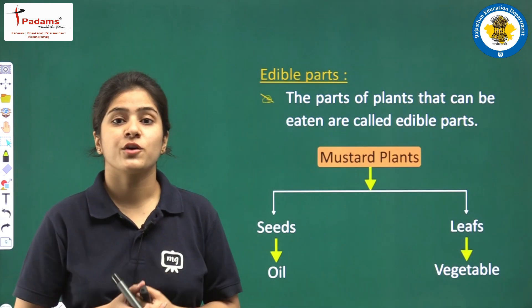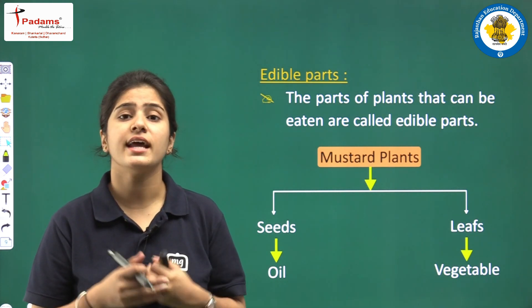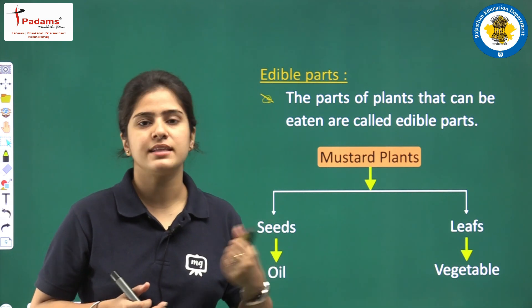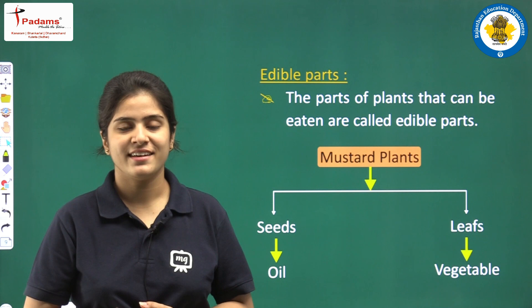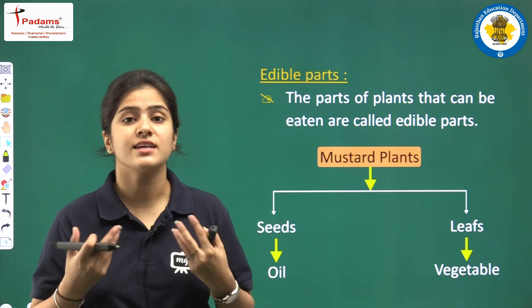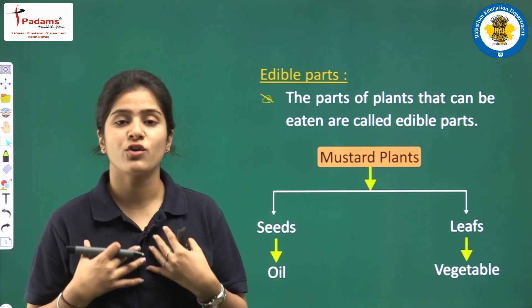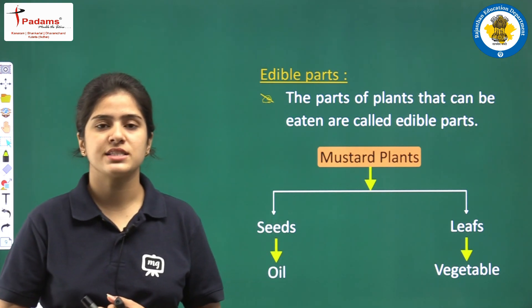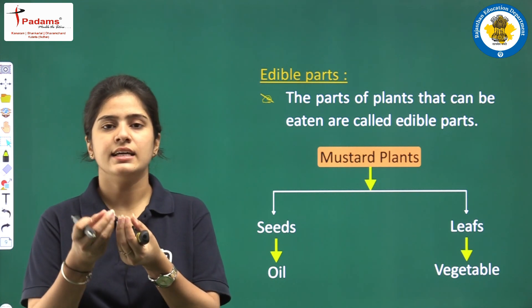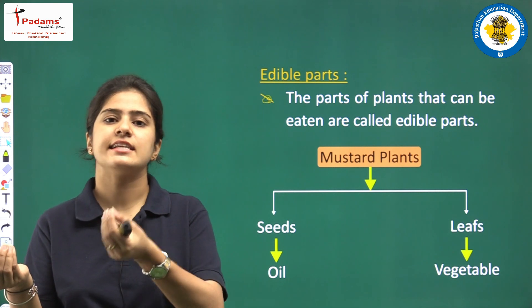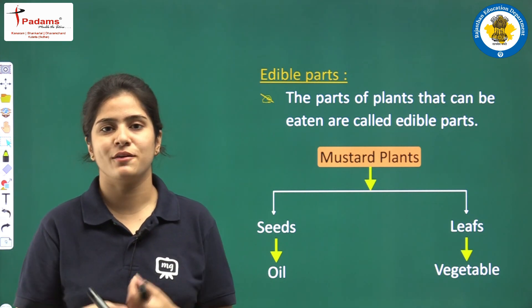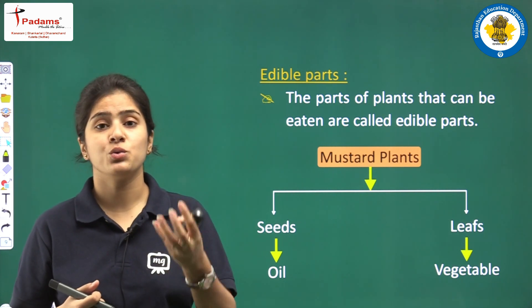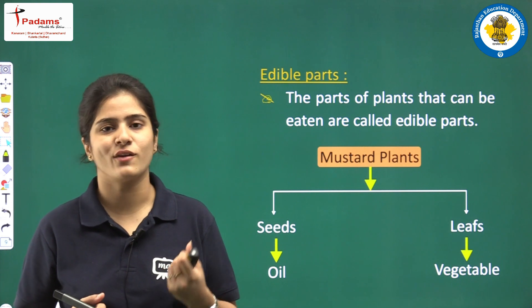Next, we are going to discuss edible parts. Edible things are the things that we can eat. The parts of the plant that we can use for eating are called edible parts. For example, in a mustard plant, its seeds are used for making oil and its leaves are used as a vegetable. The part or portion that we can use for eating is what an edible part is.